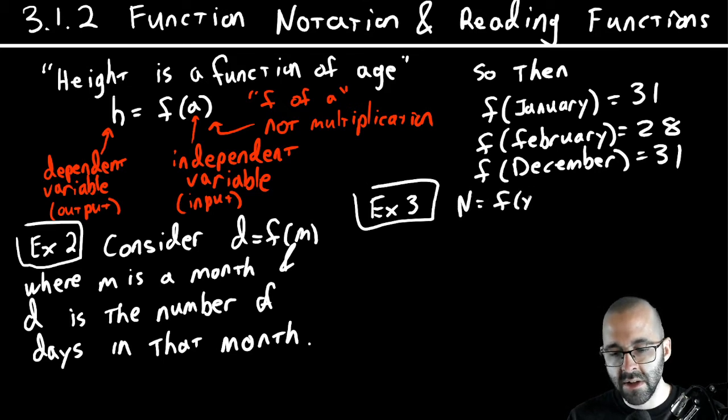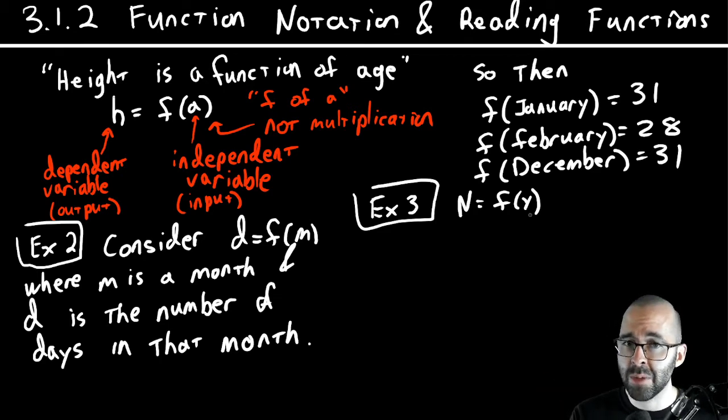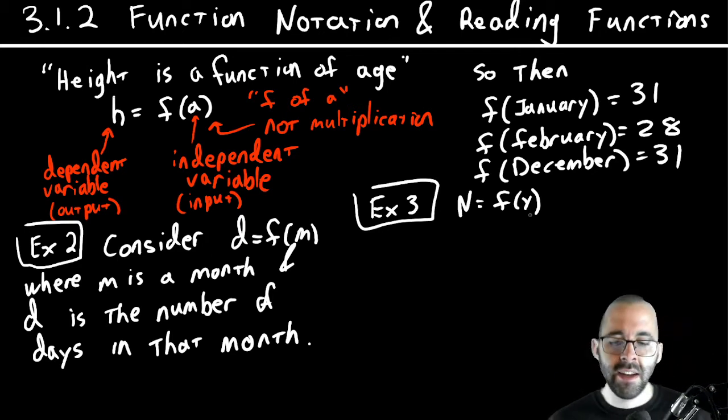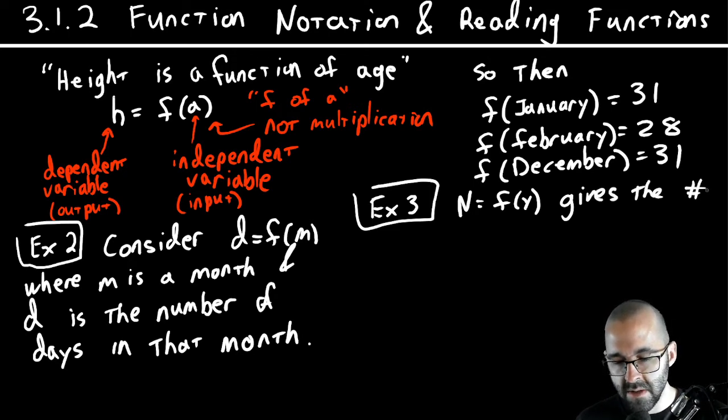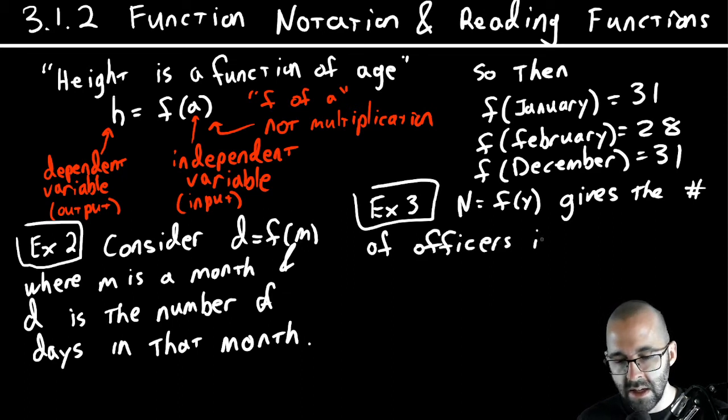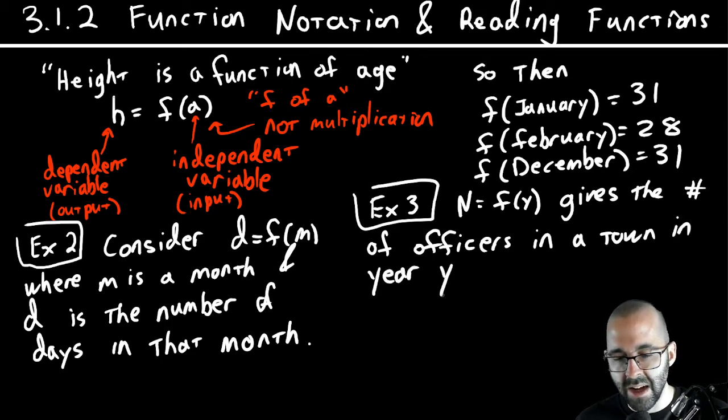n equals is a function of y. This is kind of weird because y is usually the output, but here y is the input. It's on the inside and it just makes sense sometimes. This gives the number of officers in a town.